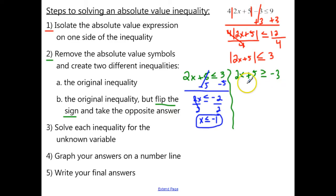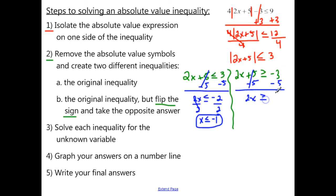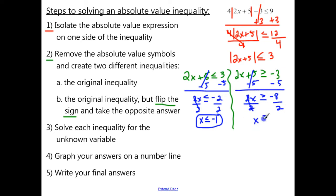Now let's solve our second inequality. Subtract 5 from both sides — those cancel — and we have 2x greater than or equal to negative 8. Divide by 2, those cancel, and we're left with x is greater than or equal to negative 4.